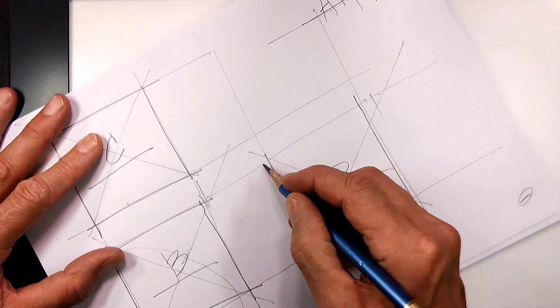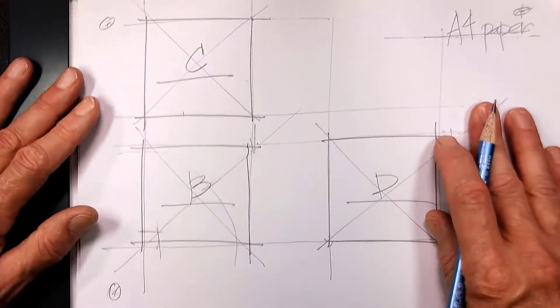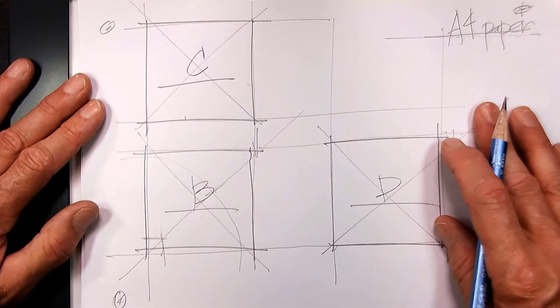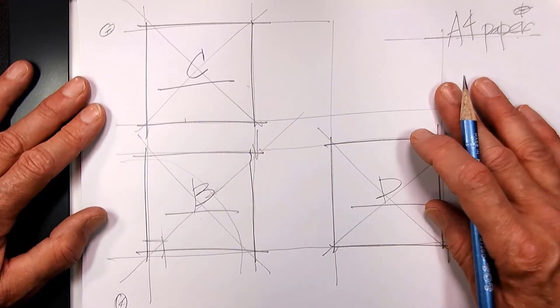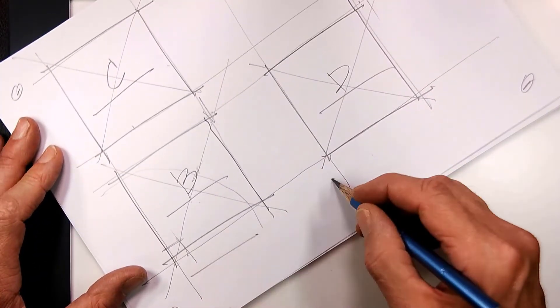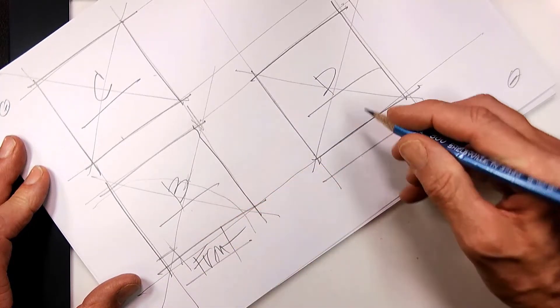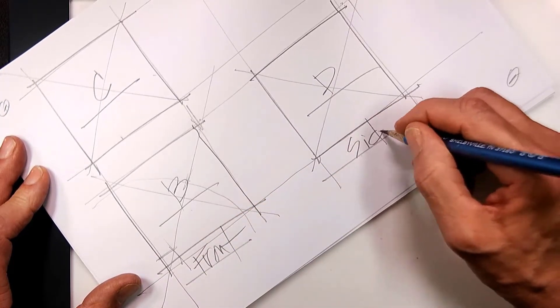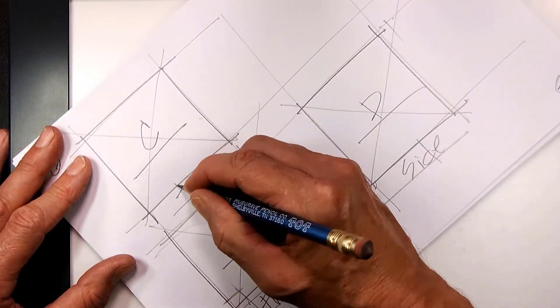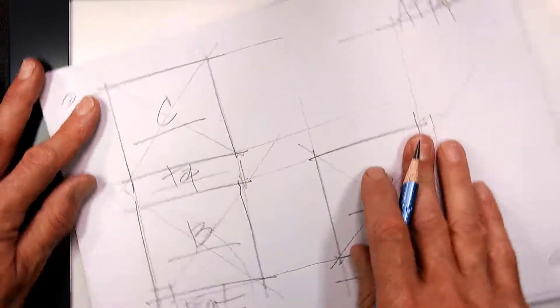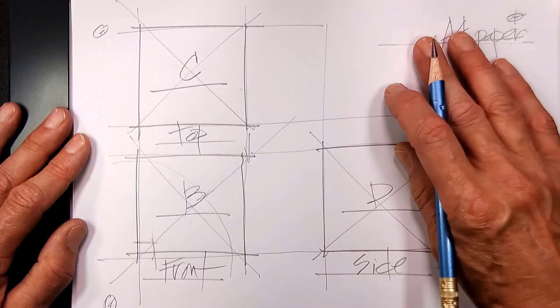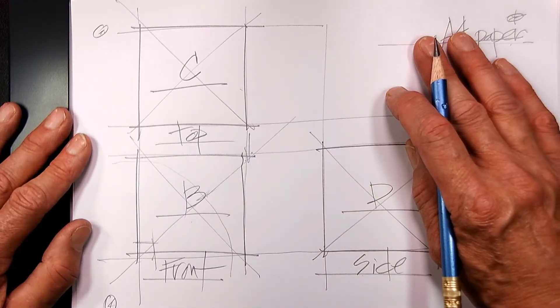So what we have now is a set of three orthographic views of a cube. We have the front, we have the side, and we have the top. All right, now I'm going to show you some examples of orthographic drawings that I have done.